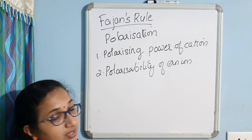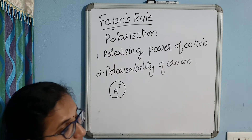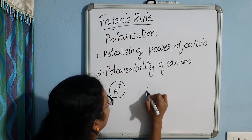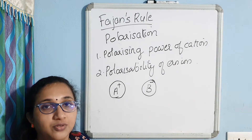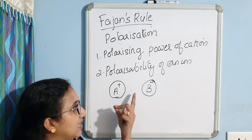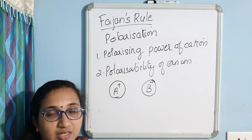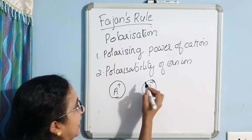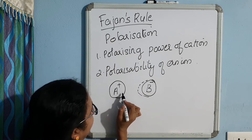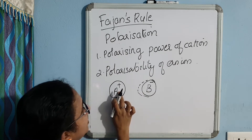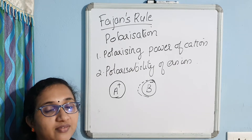Polarizing power of the cation means it is the ability of the cation to distort the valence shell of the anion. When we have an anion B⁻, anions are usually larger in size, so their valence shells are less strongly bound by the nucleus — the valence shell of the anion is loosely bound. This anion's valence shell can be distorted or dragged towards the cation, and that depends on the polarizing power of the cation.